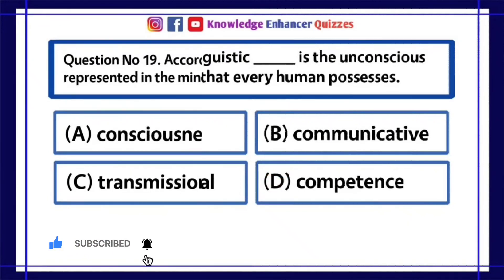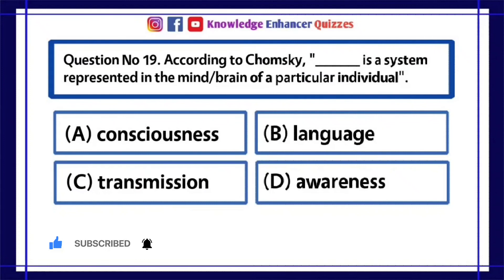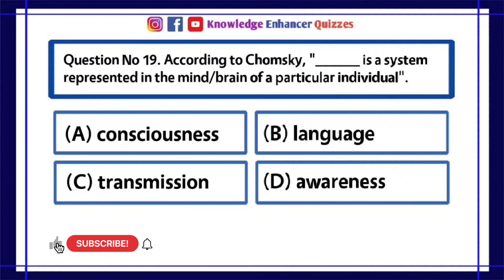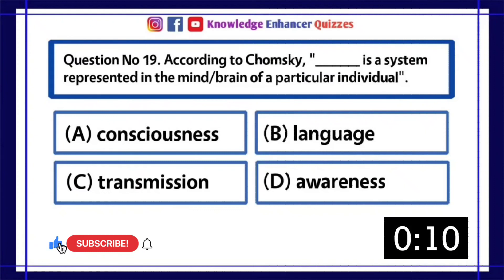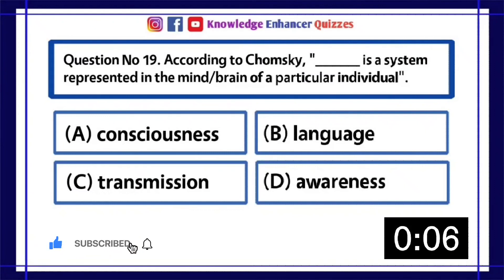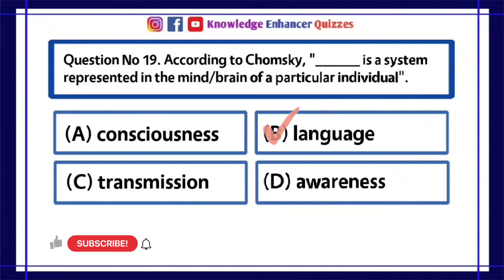Question Number 19: According to Chomsky, dash is a system represented in the mind-brain of a particular individual. A. Consciousness, B. Language, C. Transmission, D. Awareness. Option B is the right answer.